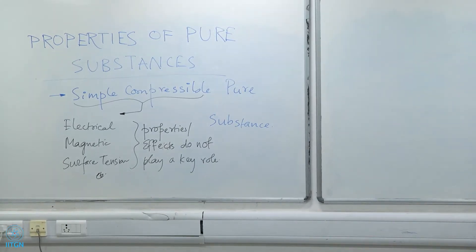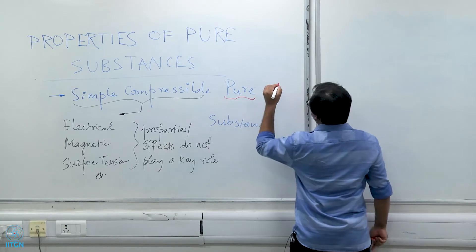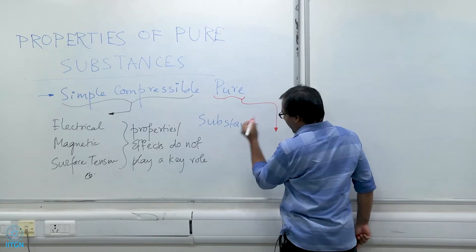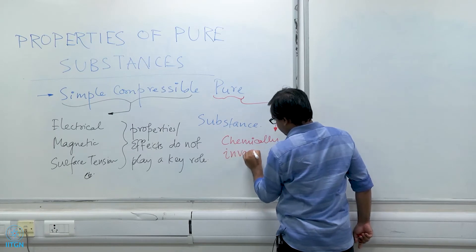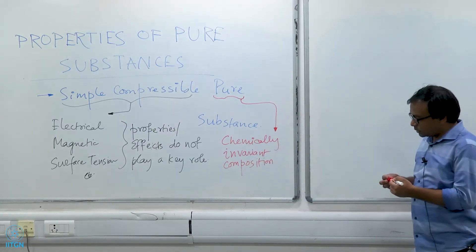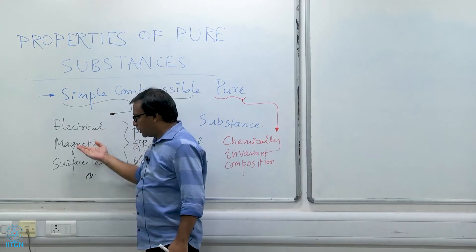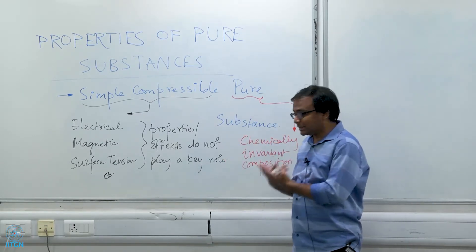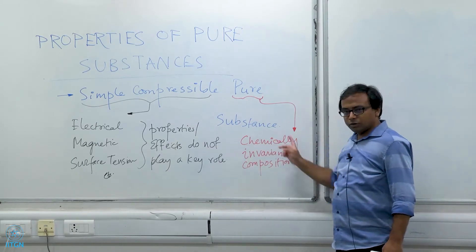Now let us come to 'pure.' A pure substance would have chemically invariant composition everywhere. So a simple compressible pure substance is a combination of these two things: first, that electrical, magnetic, and surface tension effects are not important during a thermodynamic process; and second, that the substance has chemically invariant composition everywhere.